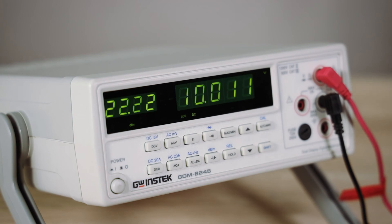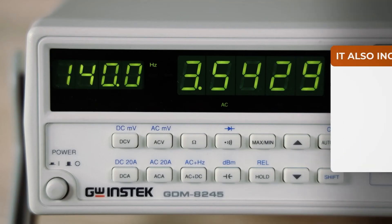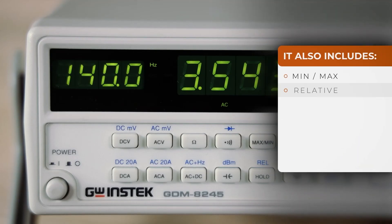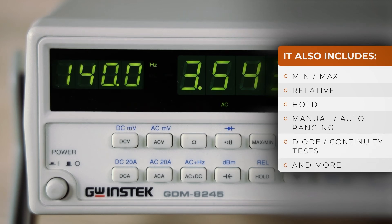During DC voltage measurement, the user can view power or AC voltage ripple. Other functions such as minimum, maximum, relative, hold, manual or auto-ranging, as well as diode and continuity tests, can be easily accessed via the control panel.